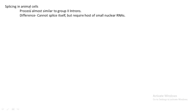Next is splicing in animals. How does splicing take place in animals? The process is almost similar to the same method undertaken by group 2 introns. But the only difference is that in animal cells, these introns cannot splice by themselves. They need some other agents — some enzymes, some RNAs. That group of RNAs is called small nuclear RNAs, otherwise called snRNAs.